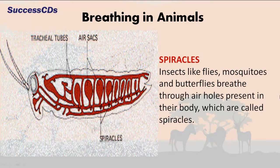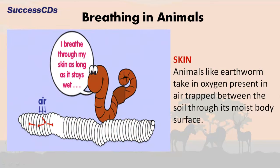Insects like flies, mosquitoes and butterflies breathe through air holes present in the body which are called spiracles. Animals like earthworms take in oxygen present in air trapped between the soil through their moist body surface.